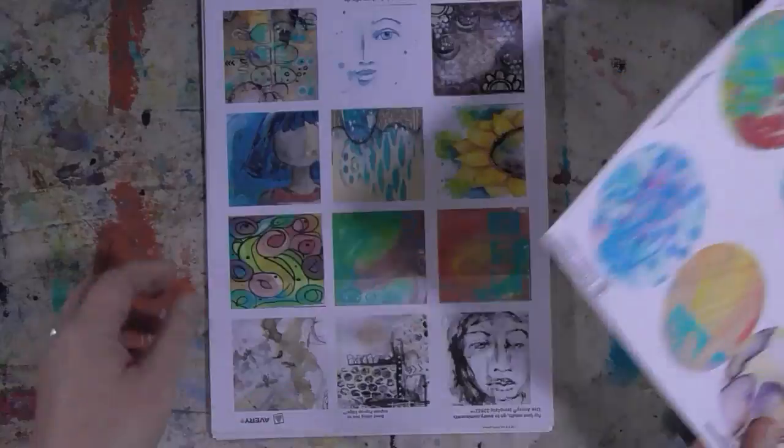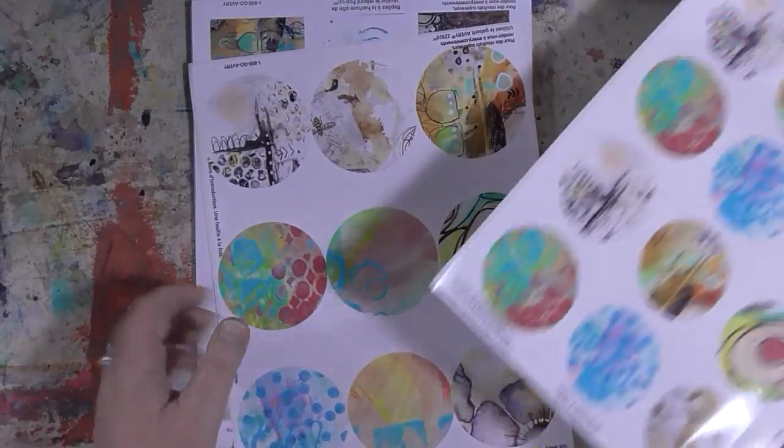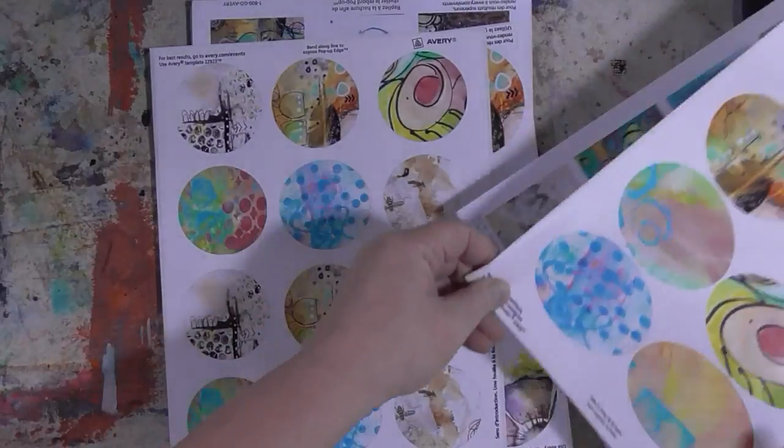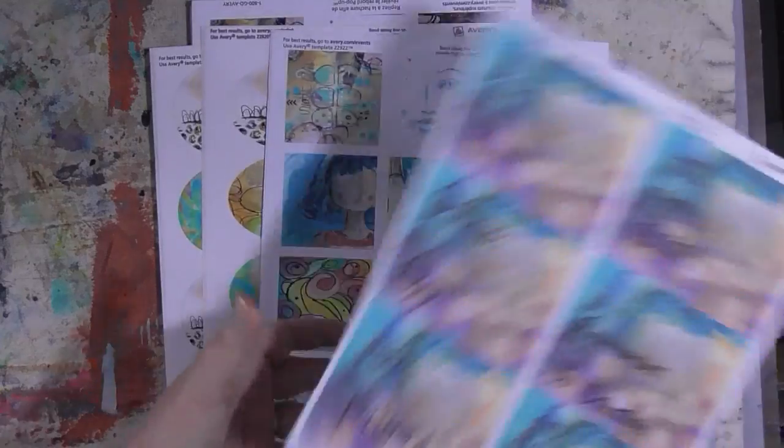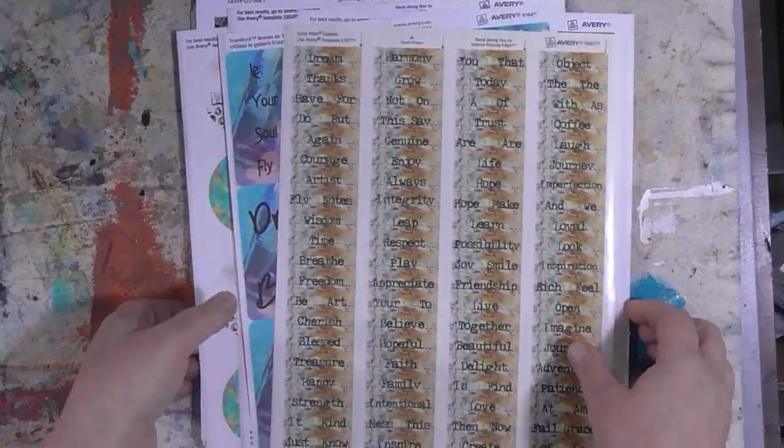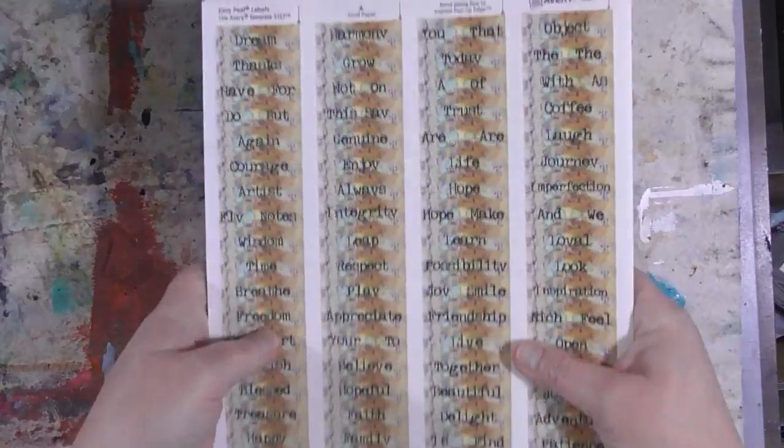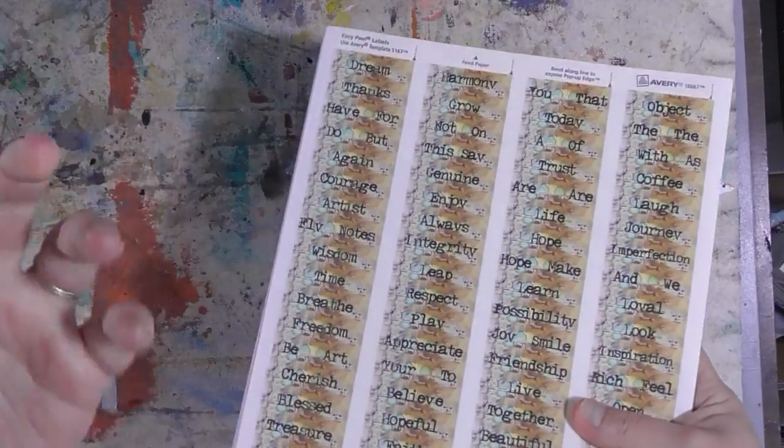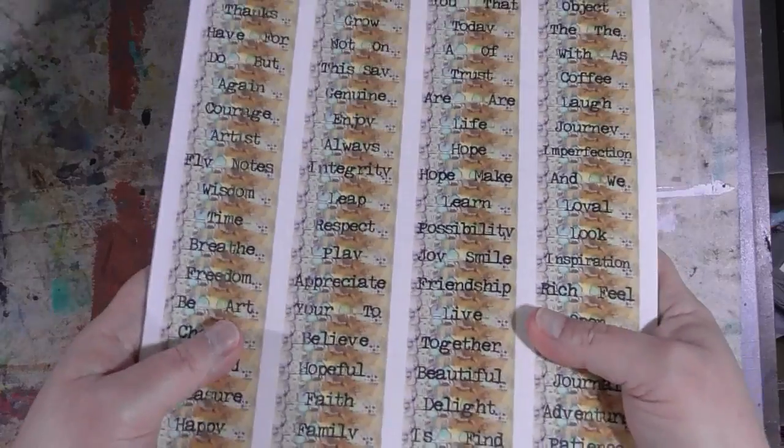So I have one, two, three, four, five, six new listings today. Go take a look at them and let me know what you think. All of them are fairly inexpensive, and because it's a digital download, you can download the file and you can reprint these over and over again. I love that.